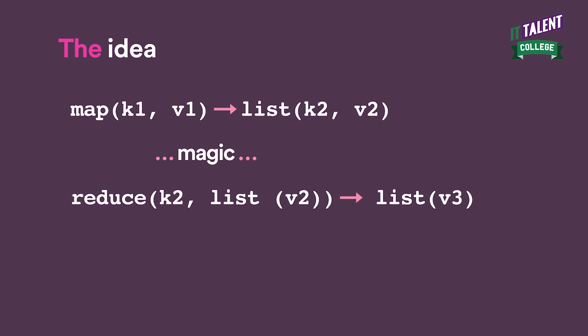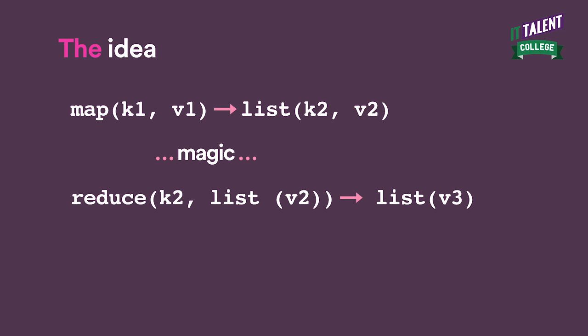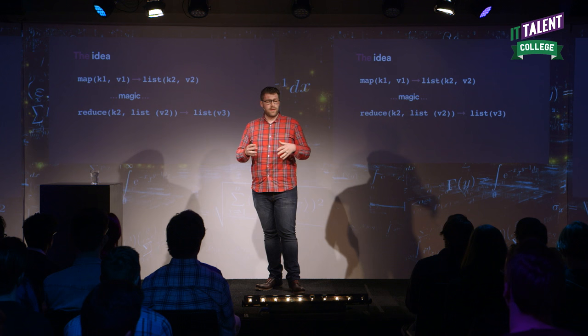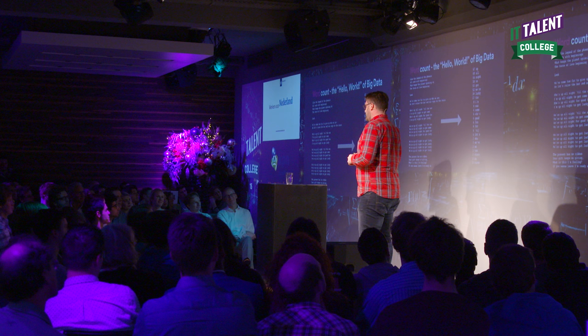The idea is that you have a map with a key and a value. You put that key-value pair into a map function, and that map function produces a list of potentially another key and potentially another value. Then there's some magic that happens, and you have a reduce function that takes in a key and a list of values belonging to that key, and from that you generate a list of a third value. I want to take you through what's called word count, which is sort of the hello world of big data. If you don't know this, you're not a big data developer or data scientist — so study this. It's very important.